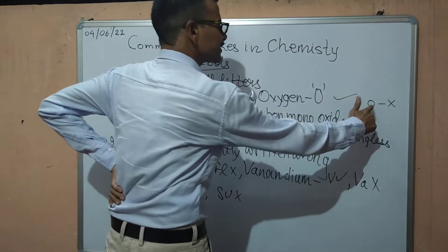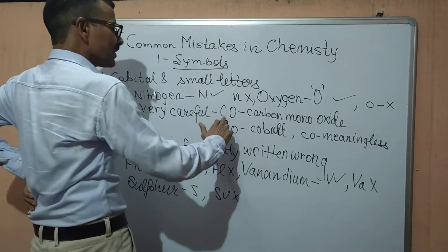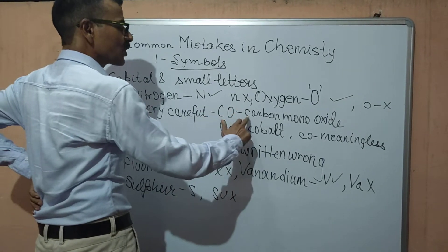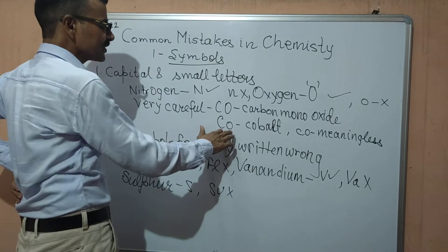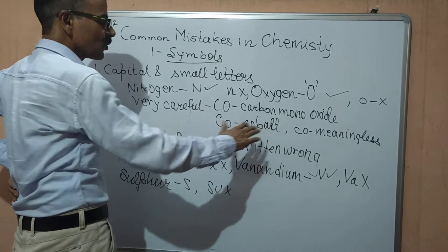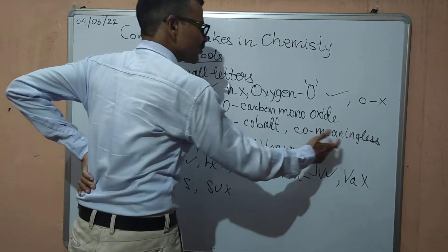For oxygen capital O is correct and small o is wrong. If we are not careful, we write capital C and capital O for carbon monoxide, it is correct. But if we write capital C and small o it becomes cobalt, an element not the carbon monoxide, and small c and small o is meaningless.